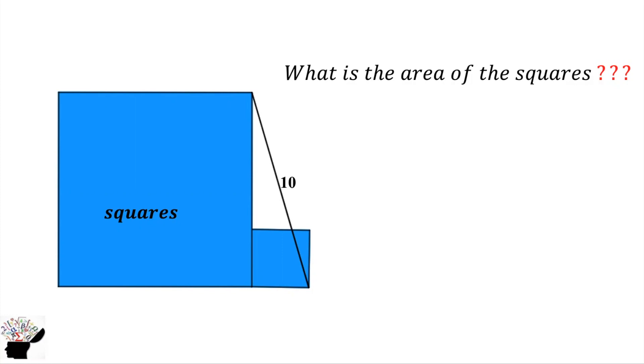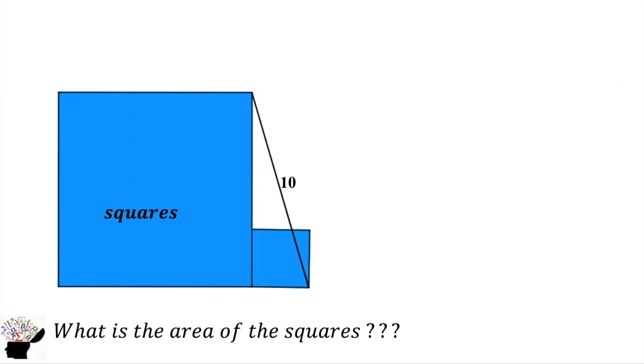First of all we can label the parts. You can see the bigger square can be x and the smaller square will be y. So a square has all its sides equal, right? So this side of the bigger square will be x, and this side of the smaller square also will be y.